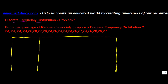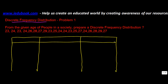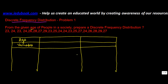You will draw three columns. The first column will comprise of the variable. In this case, the variable is the age, so you write in the age.